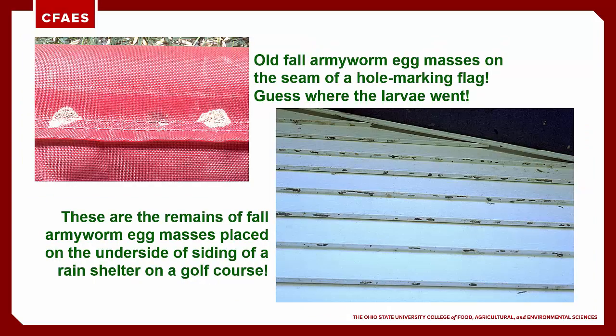Turf managers, especially on golf courses, need to be aware that Spodoptera armyworms will lay many masses of eggs on structures that overhang the turf — tree or shrub leaves, greens flags, cart path cables, ball washing stands, and even the siding of buildings that have turf up to their sides. It's a great practice to train the greens mowing crew to inspect flags and markers for egg masses before they mow. Simply crush the egg masses with your fingers and you will have eliminated hundreds, possibly even thousands, of potential pests.